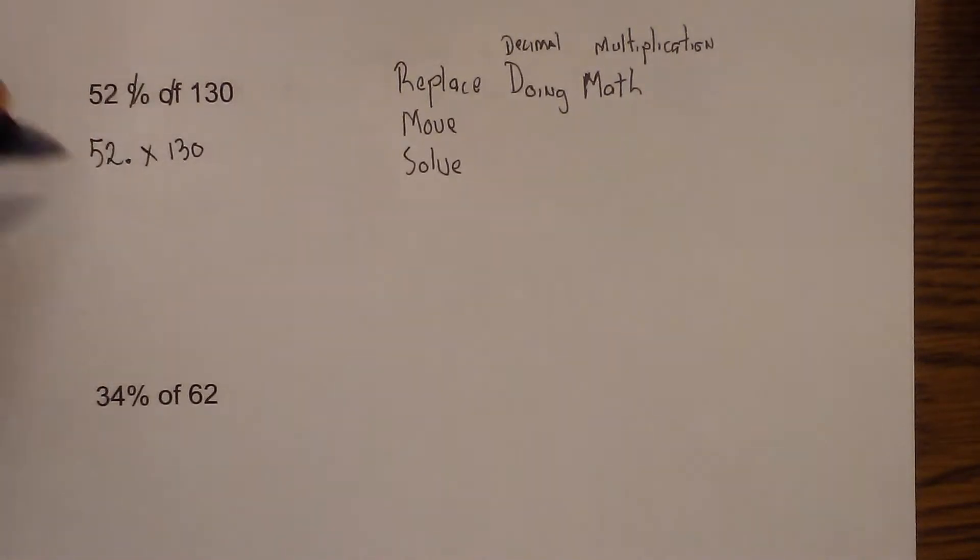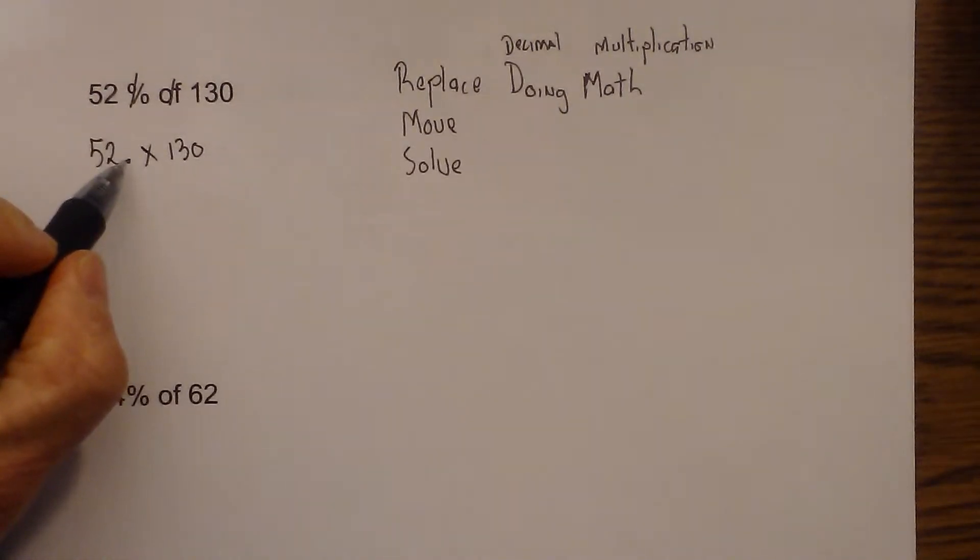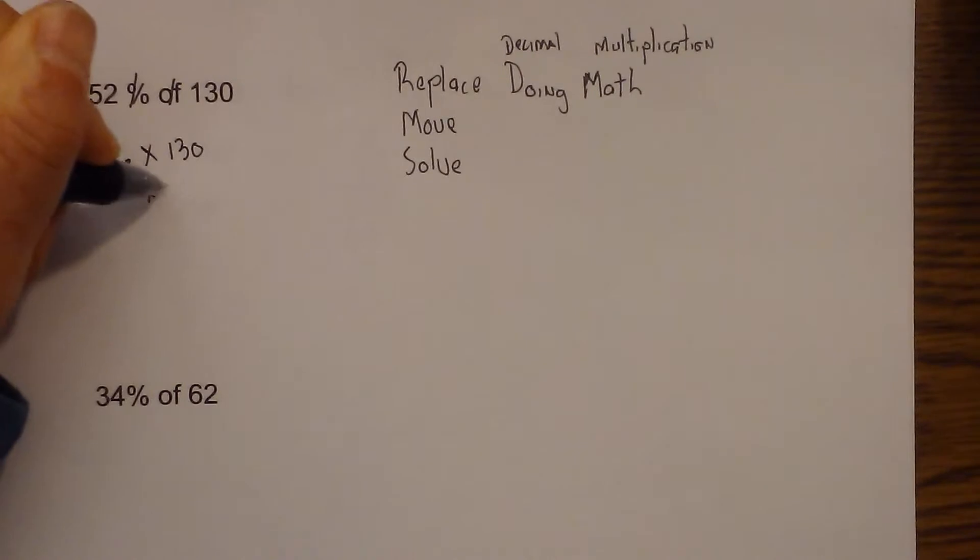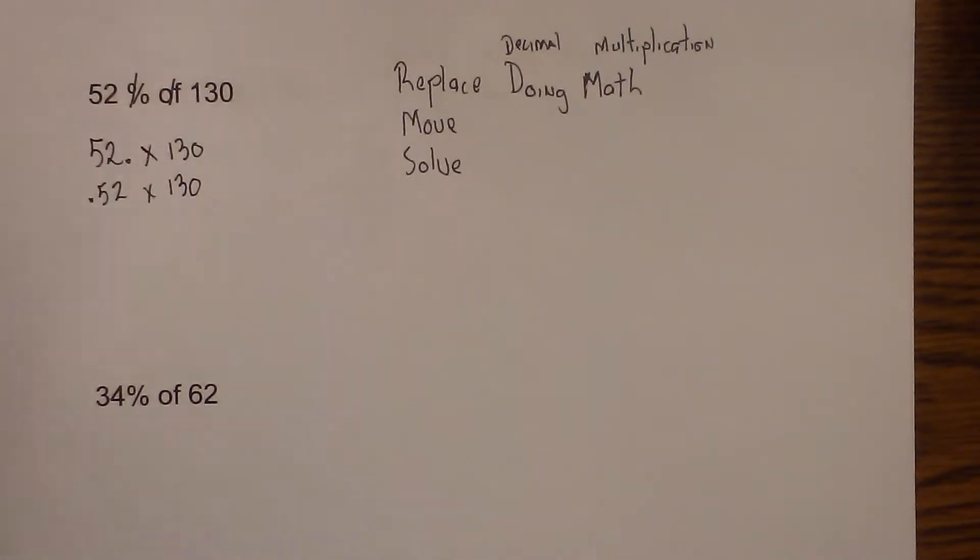Next, I move the decimal two places to the left. So I'm going to rewrite that so that becomes .52 times 130. And now I just solve.